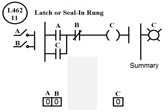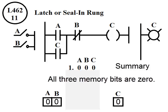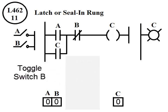In summary, the three memory bits are 0, 0, 0. Now let's change, let's toggle switch B.